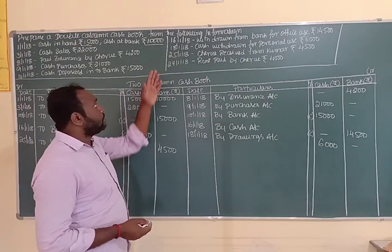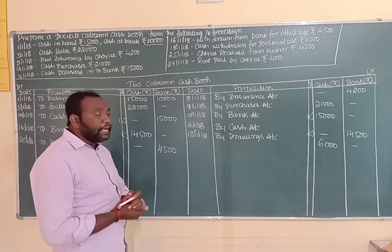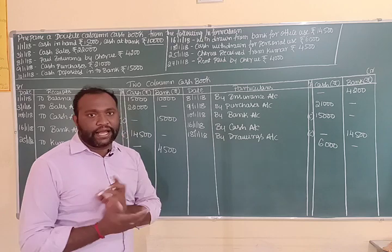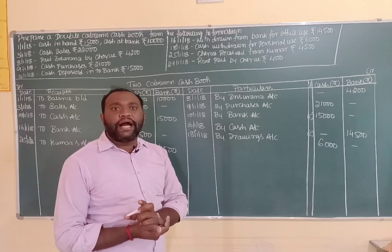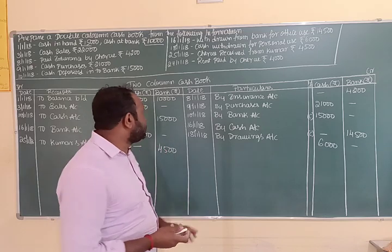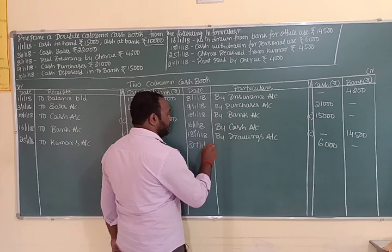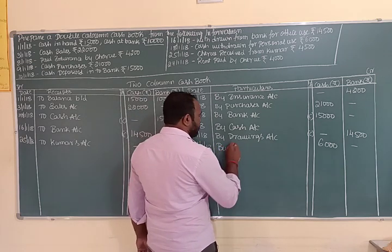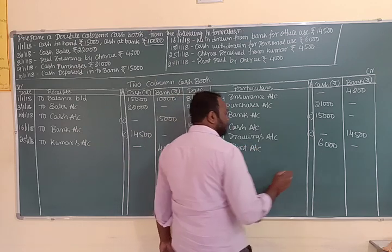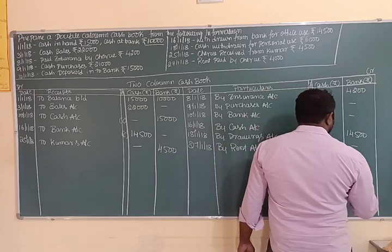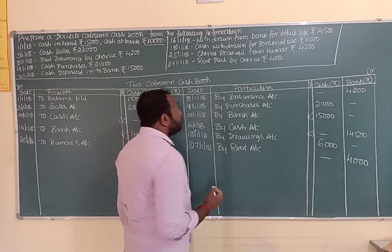On 27th January 2018, rent paid by cheque. A cheque means bank. The journal entry is rent account debit to bank account. We record 'By Rent Account' on the credit side, entering rupees 4,000 in the bank column.